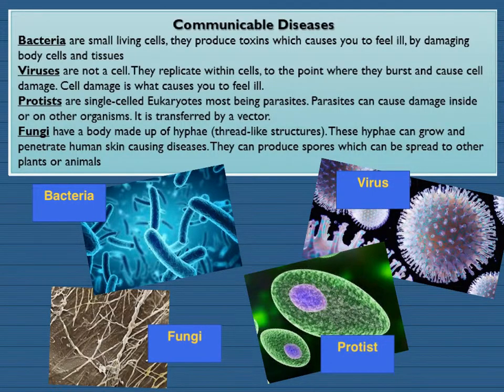You will need to learn about four different types of microbes that cause disease: bacteria, viruses, protists and fungi. You're expected to know what they are, how they make you feel ill, and what they do to your body. You will need to know a bit about their structures as well. You would have learnt in cell biology about bacteria and viruses; protists and fungi not so much, but you need to know how they cause disease.